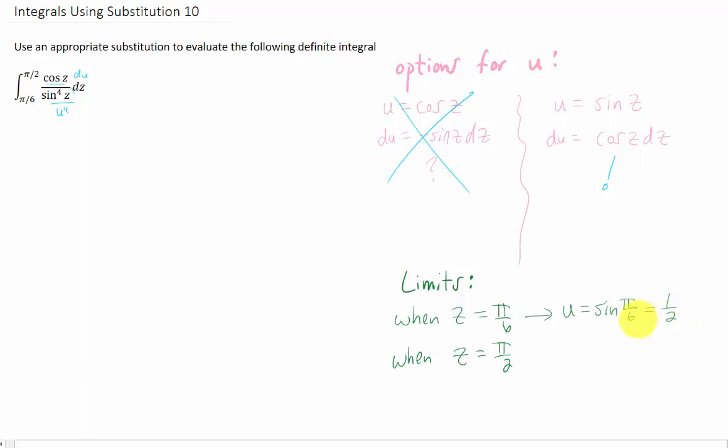When z equals π over 2, u equals sine of π over 2. And again, our unit circle tells us that that is 1. So when we convert this integral over to all u's, our limits are going to go from u equals 1 half to u equals 1.